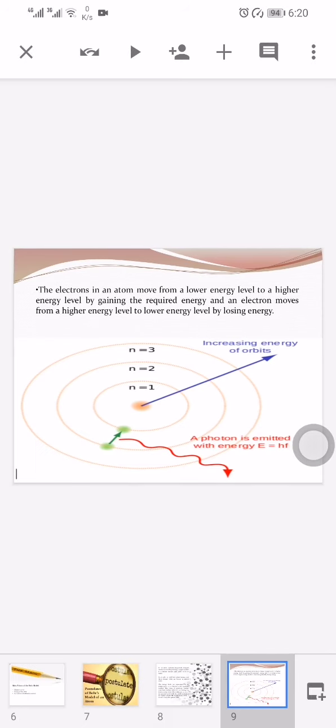The electrons in an atom move from a lower energy level to a higher energy level by gaining the required energy, and electrons move from a higher energy level to lower energy level by losing energy.